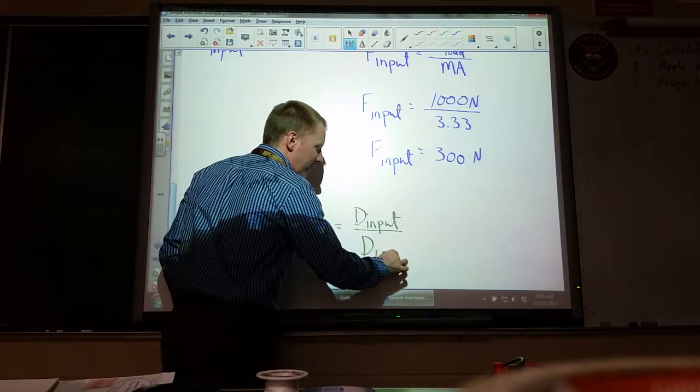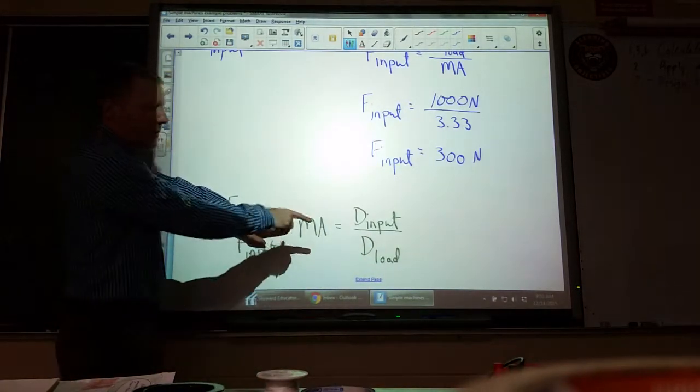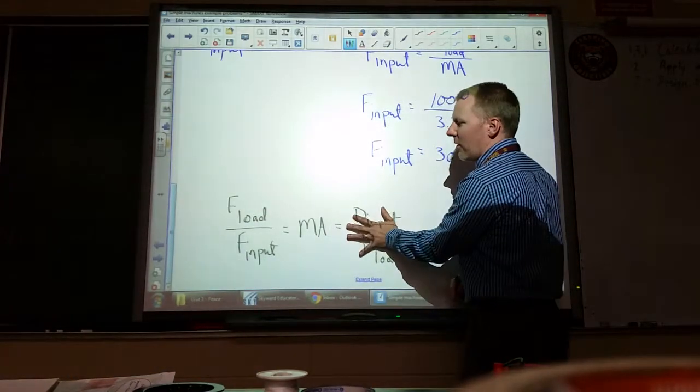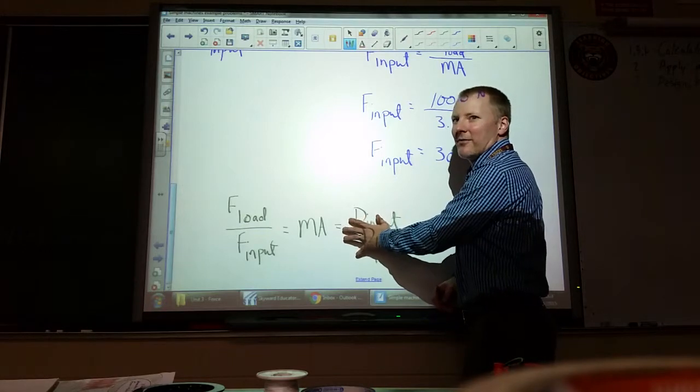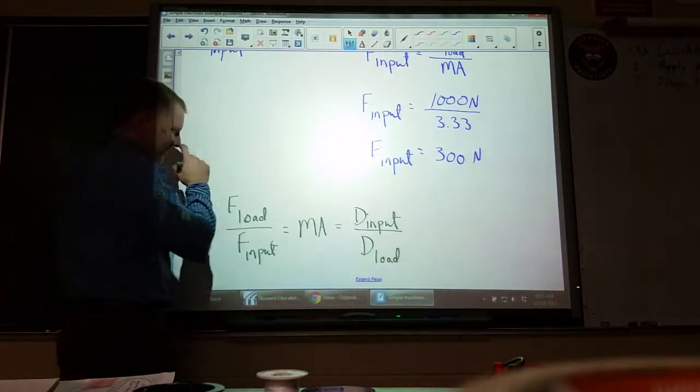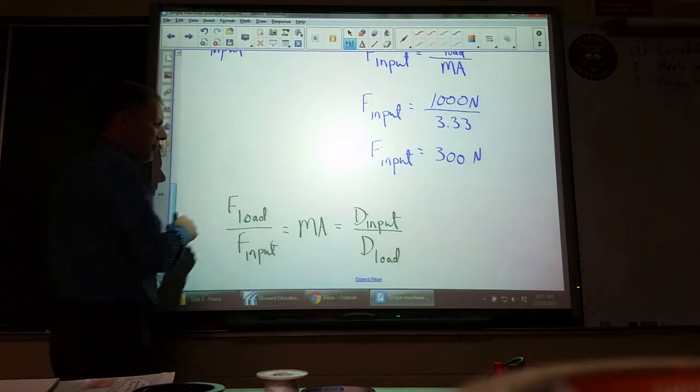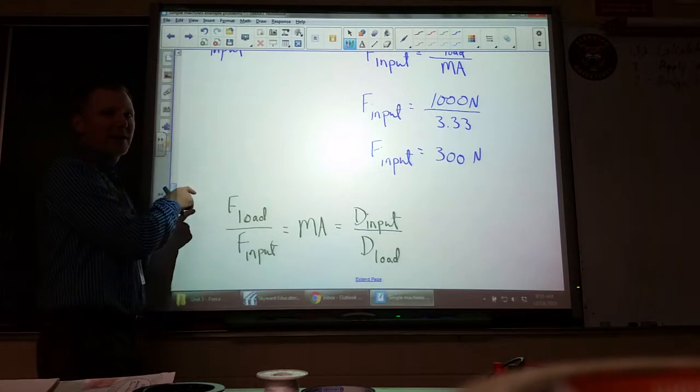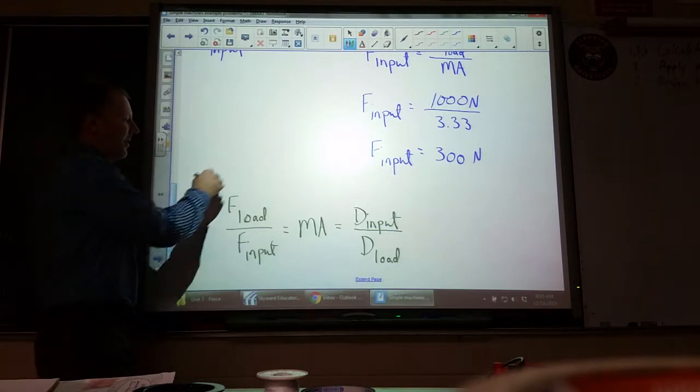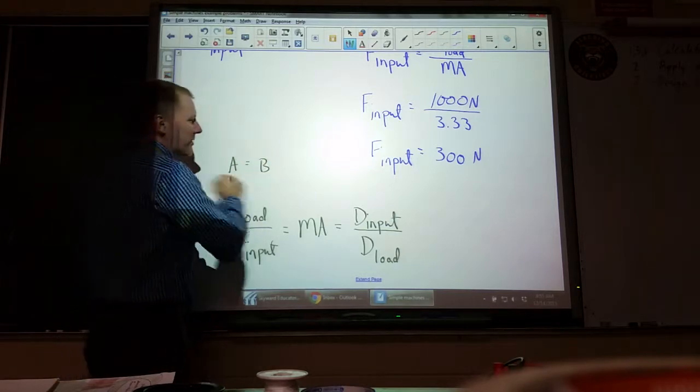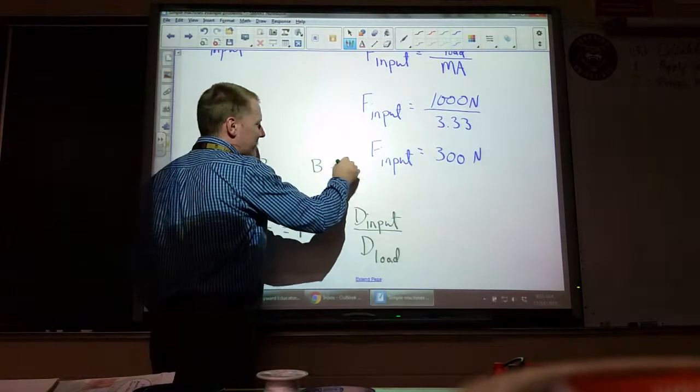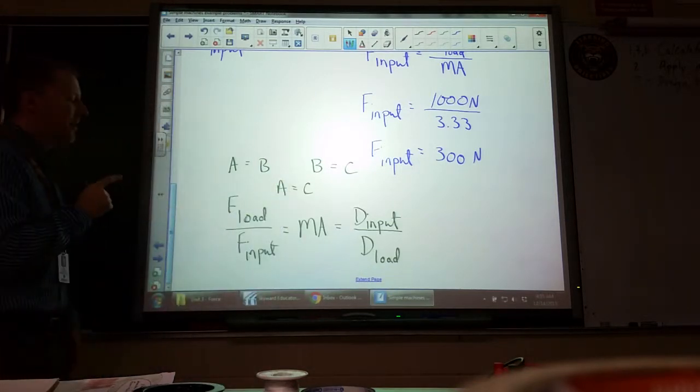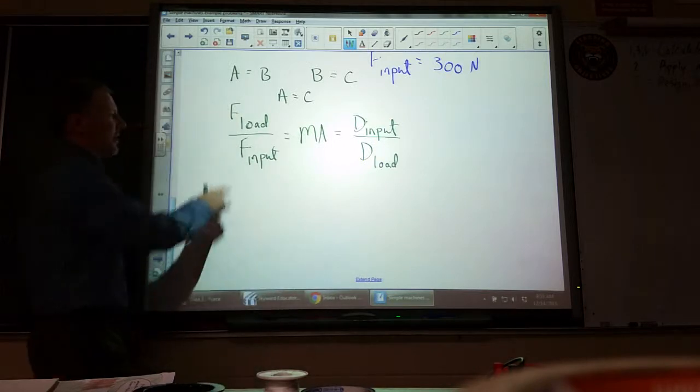They both come up with the same number if you divide them right. So we said that D_input over D_load is mechanical advantage, and we said F_load over F_input is equal to mechanical advantage. But one is 3.3 and one is 300. No, divide 1000 by 300, you get 3.3. This is saying if A equals B and B equals C, then A must also equal C.